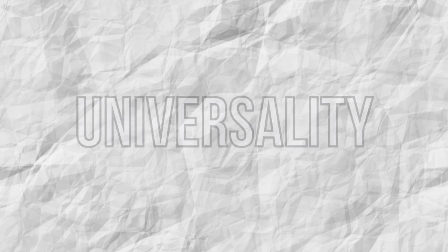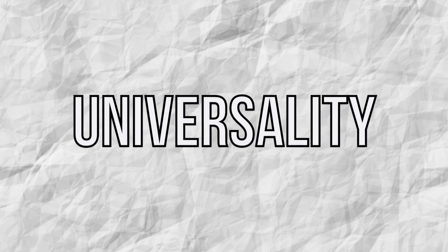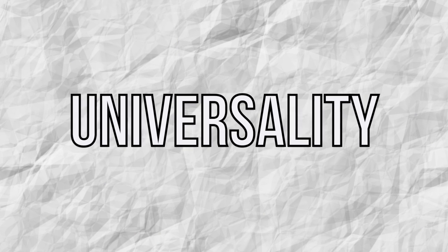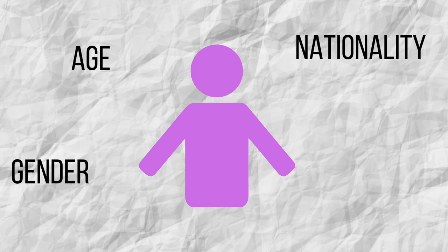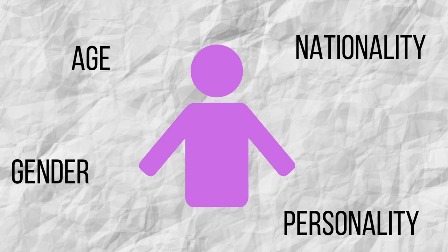Another characteristic of complex systems is universality, whereby some details do not matter. The question is to identify which are relevant or irrelevant details. If you notice, during the video we have represented all people with this symbol. The symbol tells us nothing about their age, gender, nationality, or personality, and, for many questions, we don't really need to know all this information to describe the overall behavior of the system.